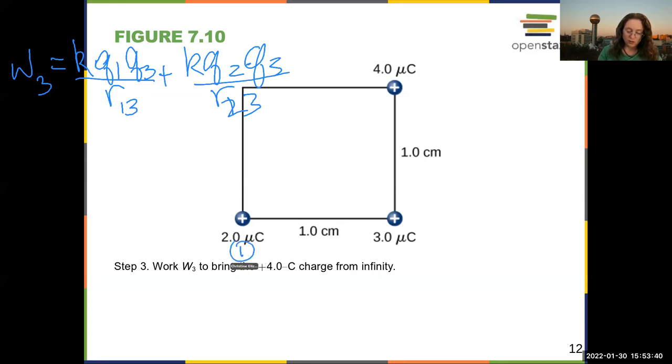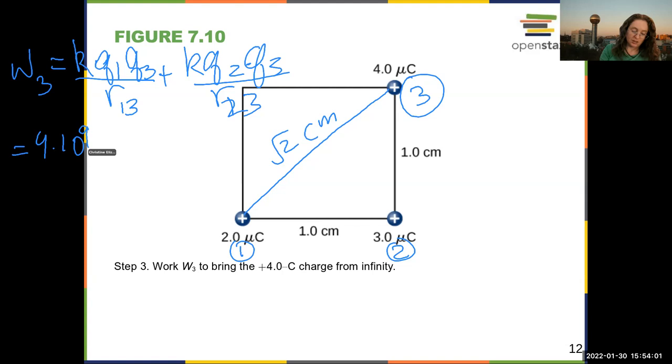So this is charge 1, this is charge 2, this is charge 3, and this distance is then the square root of 2 centimeters. So 9 times 10 to the 9 newton meters squared per coulomb squared times, big bracket, 4 times 2 is 8.